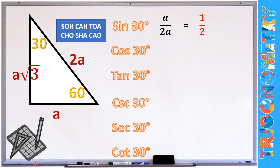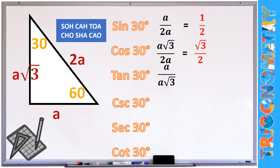For cosine 30°, that's adjacent over hypotenuse. The adjacent for 30° is A√3 and the hypotenuse is 2A. So we get A√3 / 2A. Canceling A gives us √3/2. For tangent 30°, the formula is opposite over adjacent. Opposite is A and adjacent is A√3, giving A / A√3 = 1/√3. Rationalizing by multiplying by √3/√3 gives us √3/√9 = √3/3.